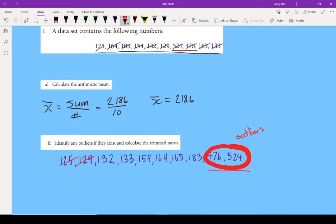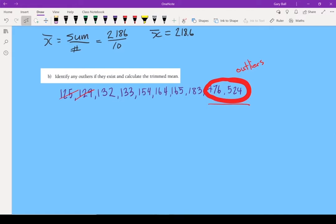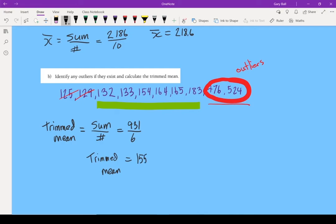All right, let's calculate that trimmed mean now. The formula is your trimmed mean equals, same thing, sum divided by the number of items we're using. So our sum now is 931. I did not use the two top numbers because those are the ones I felt where I should trim off. I now only have six items. I don't have 10 anymore. I'm only counting the ones that are in my mean. So now my trimmed mean, 931 divided by 6 gives me a mean of 155.16.